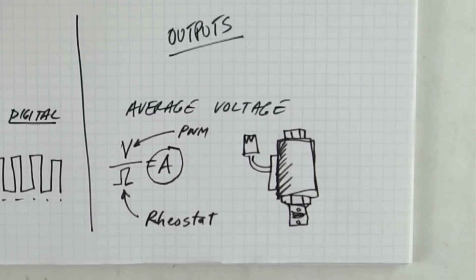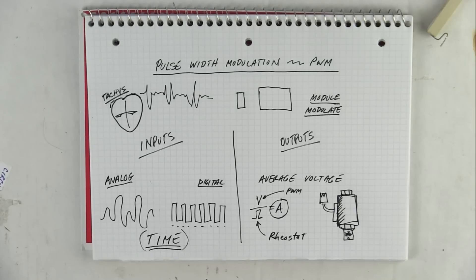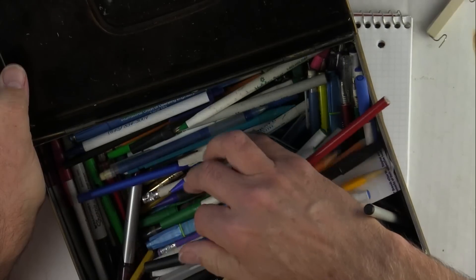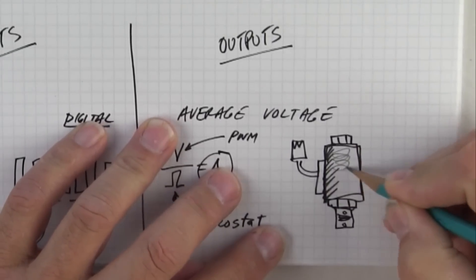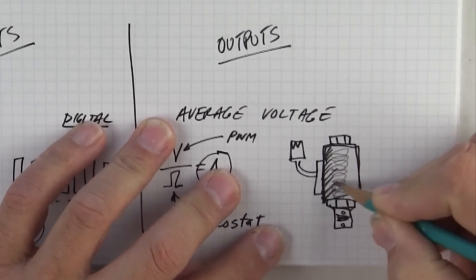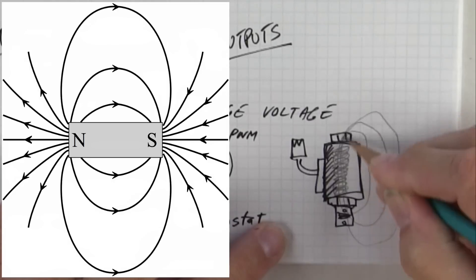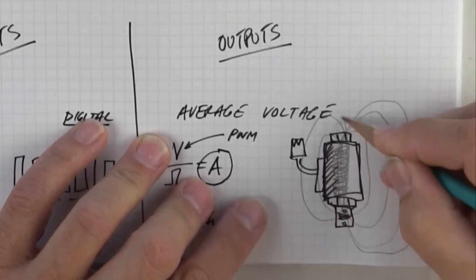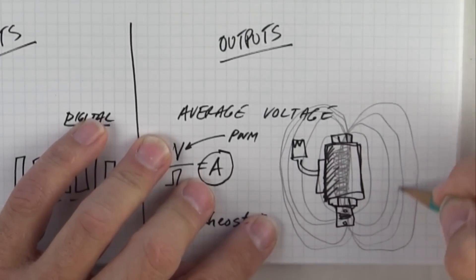A solenoid has a magnetic field. Inside the solenoid is a coil of wire — that coil of wire produces a magnetic field. The magnetic field is why you can use a compass. It's a weak magnetic field but it's still a magnetic field.